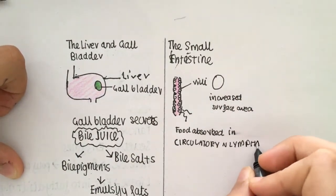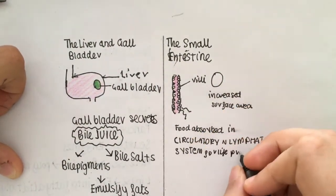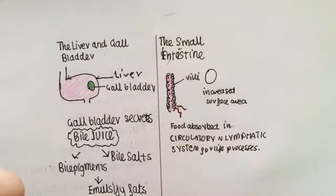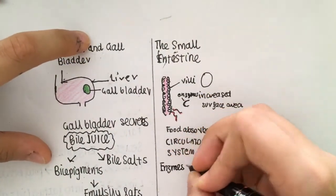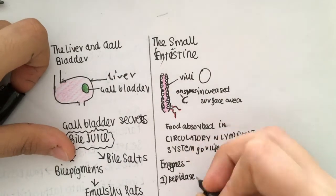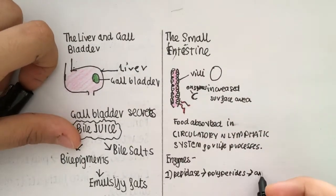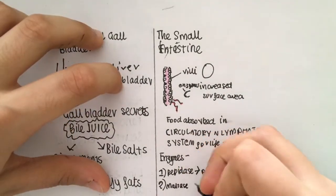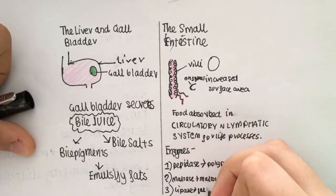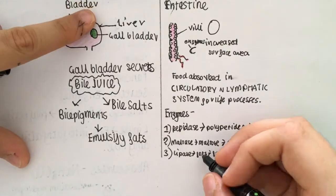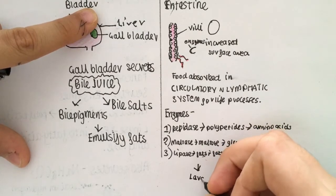The enzymes are protease, which breaks down polypeptides into amino acids; maltase, which breaks down maltose into glucose; lipase, which breaks down fats into fatty acids and glycerol; and sucrase, which breaks down sucrose into glucose and fructose.